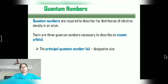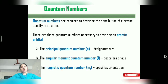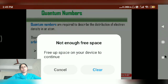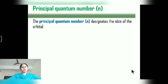The first is the Principal Quantum Number, which we represent as N. It designates the size of the orbital. The second is the Angular Momentum Quantum Number, also called the Orbital Quantum Number, represented by small l, and it describes the shape of the orbital. The third is the Magnetic Quantum Number, represented by ml, and it specifies the orientation.